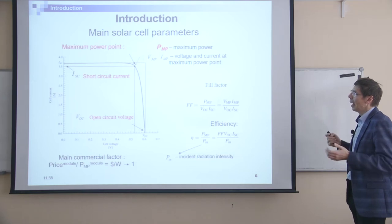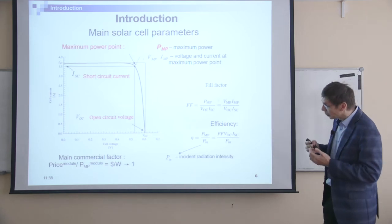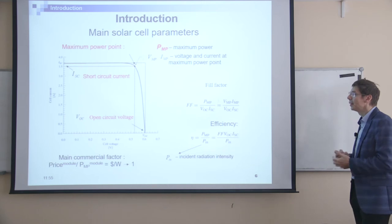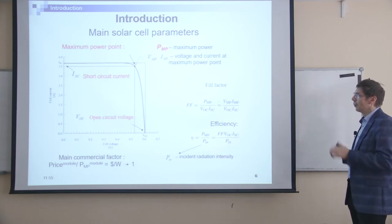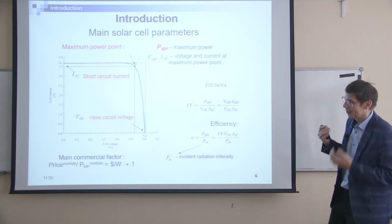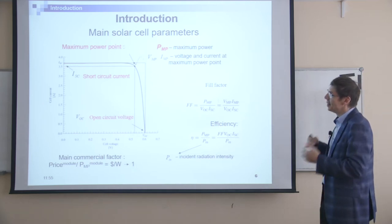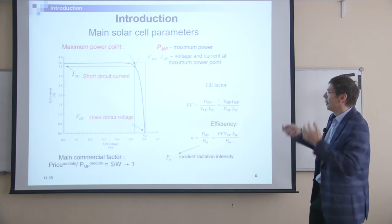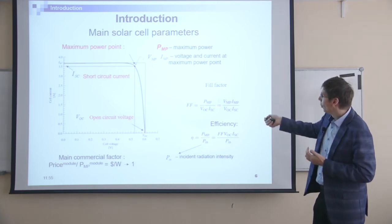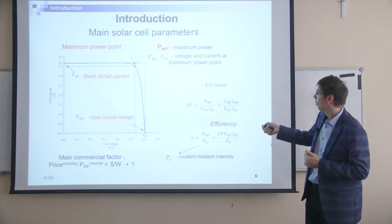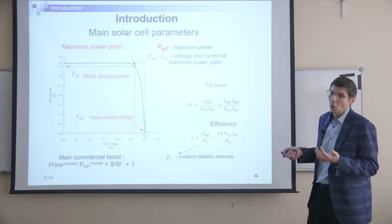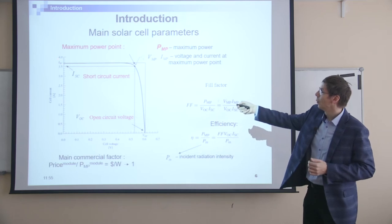You can deduce the efficiency of the solar cell if you know this maximum power and the power of the incident light. Another important parameter is the fill factor. It's a way to present the ideality of the IVQ curve. The fill factor is the ratio of the maximum power to the product of VOC and the short circuit current. It equals one, or 100%, if the IVQ is really ideal.